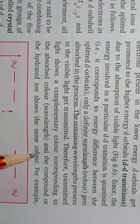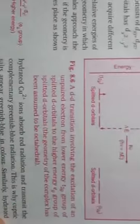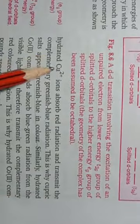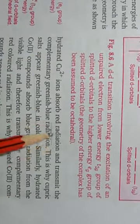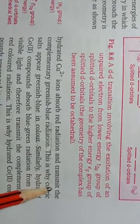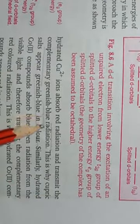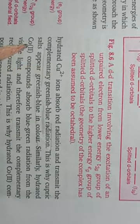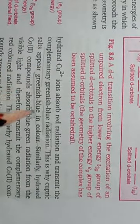Therefore, the transmitted light shows a complementary color corresponding to the absorbed color, and the compound or hydrated ion shows that same color. For example, hydrated copper ions absorb red radiation and transmit the complementary greenish-blue radiation, and that is why compounds of Cu²⁺ ions are greenish-blue in color.